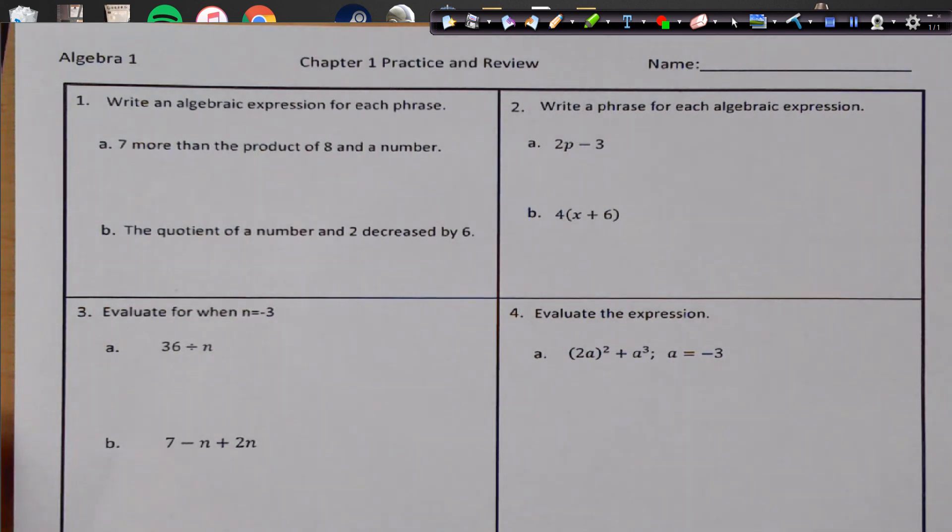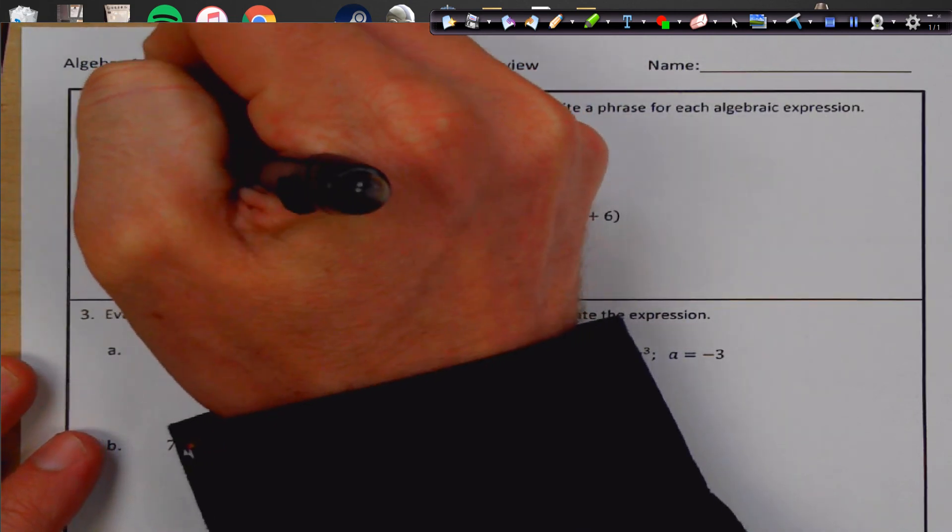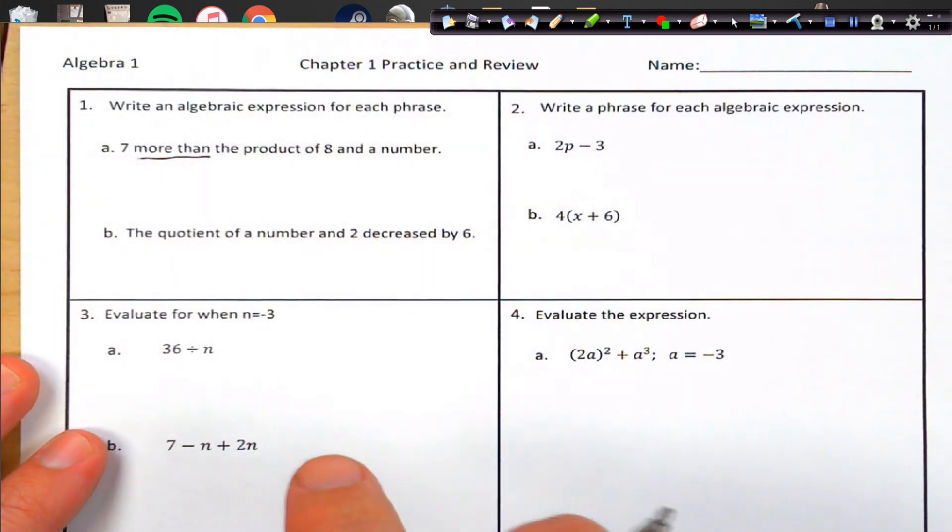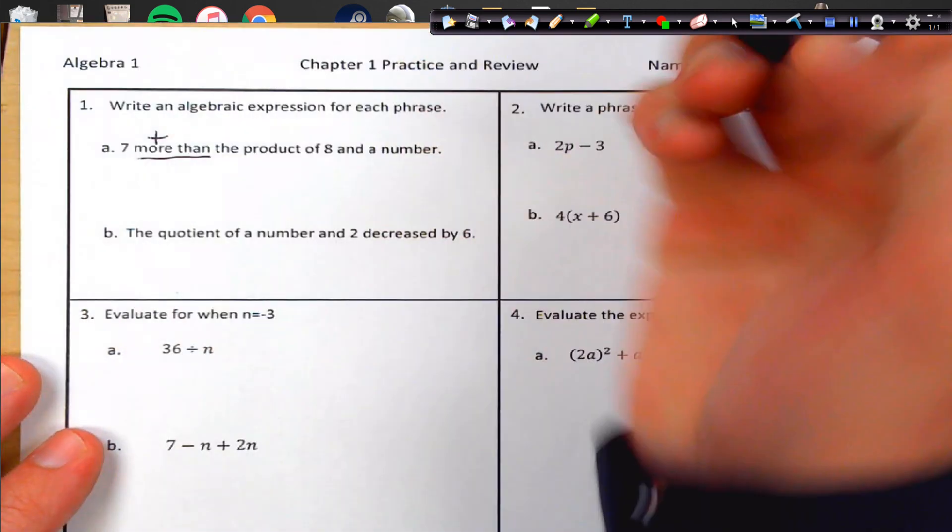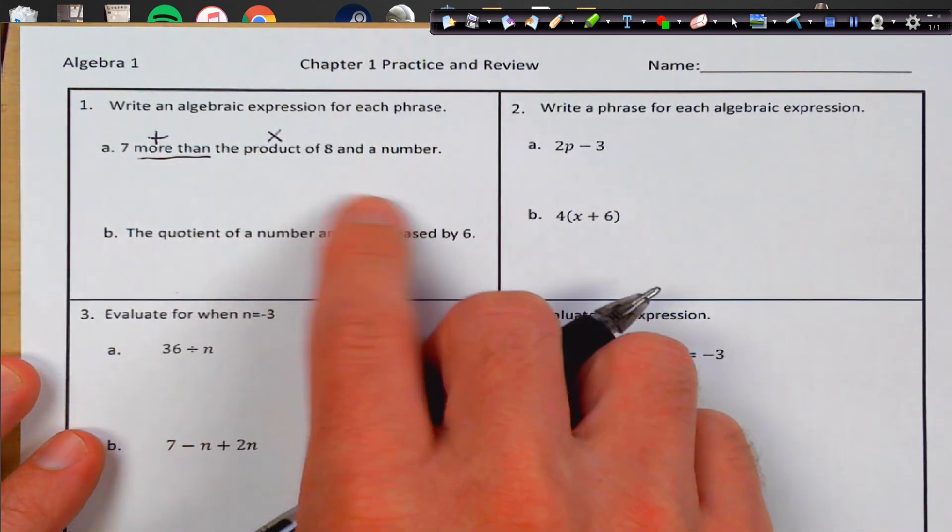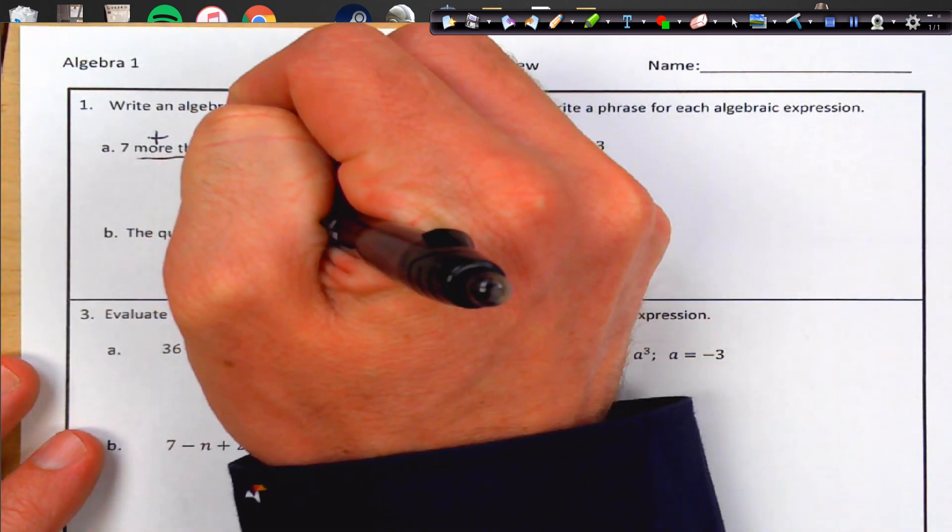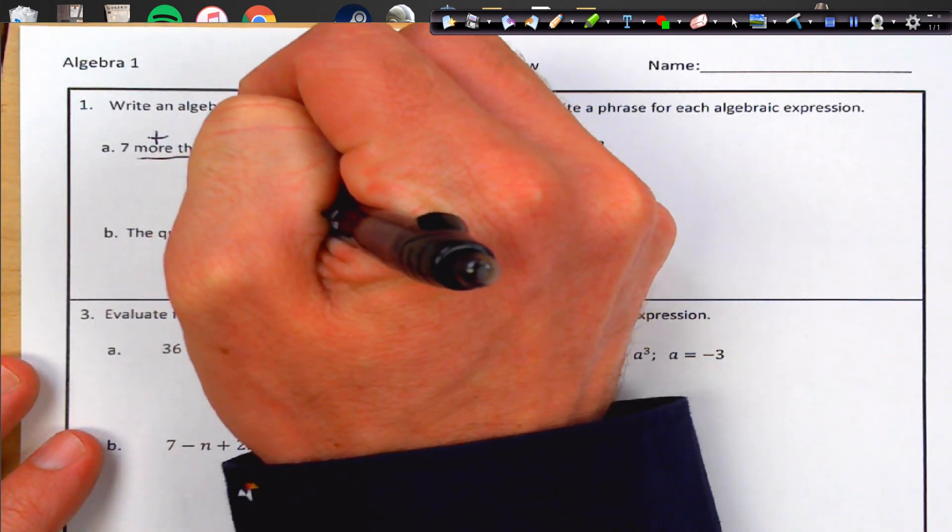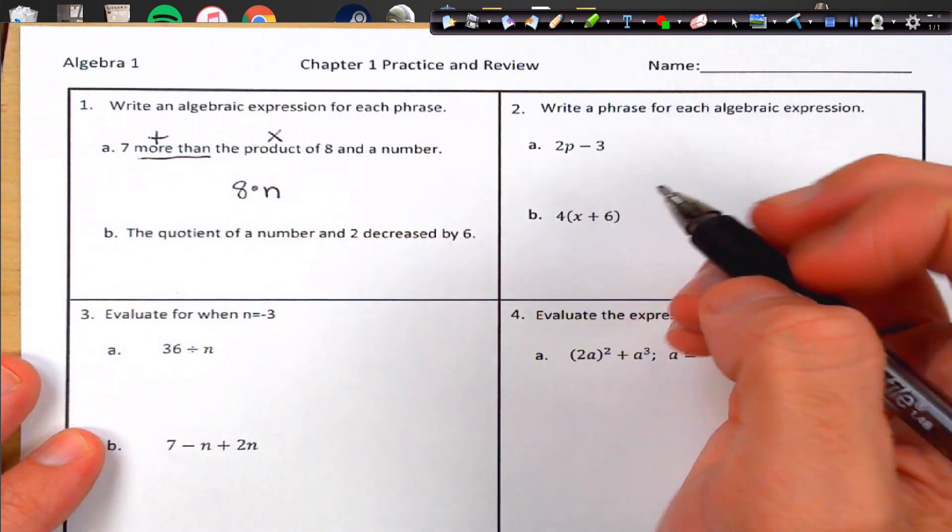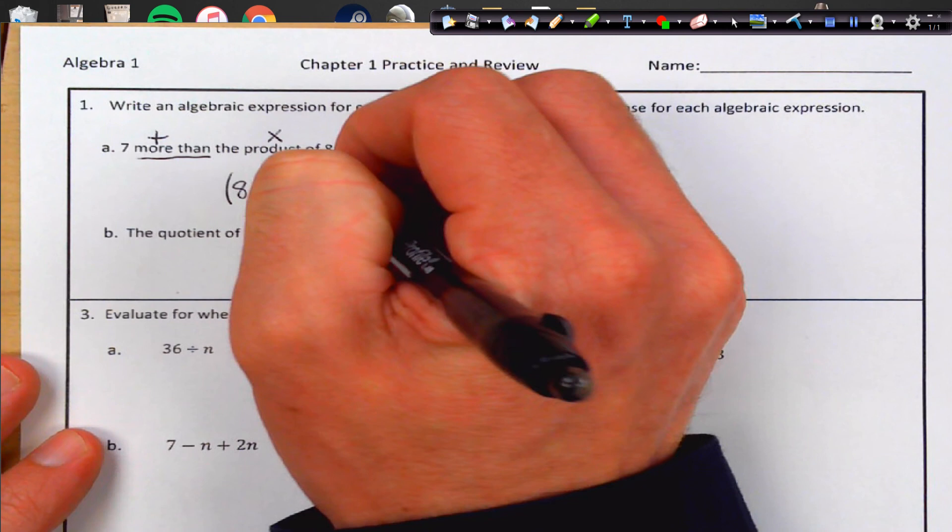So write an algebraic expression for each phrase. 7 more than the product of 8 and a number. When you see more than, it means we're going to put it afterwards. So the word more means plus, product means multiplication. So we're going to say the product of 8 and a number. We're going to do 8 multiplied by n. And it says 7 more than, so instead of putting it in the front, we're going to put it afterwards just like that.